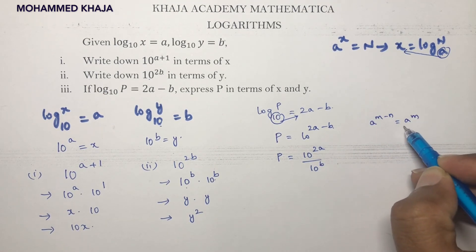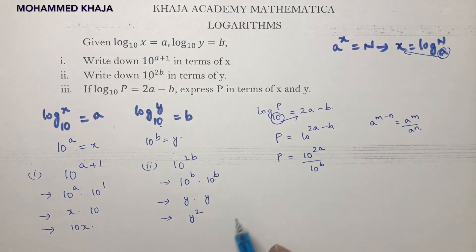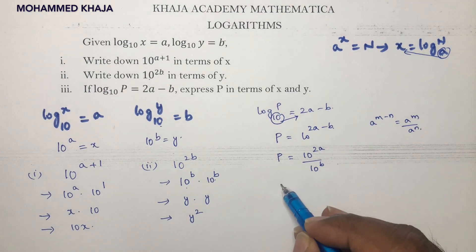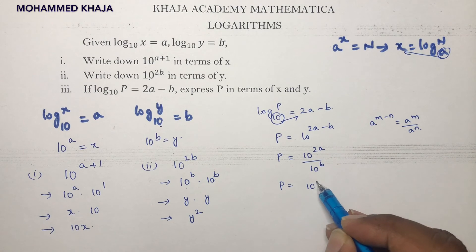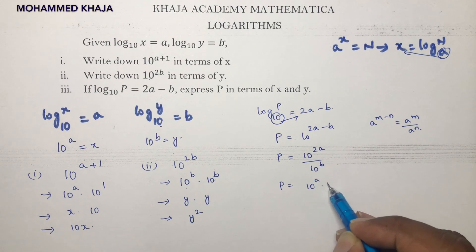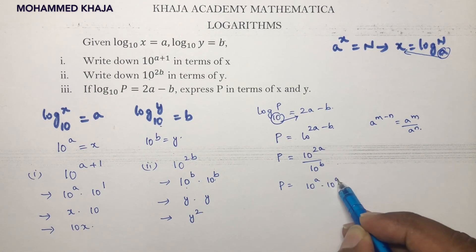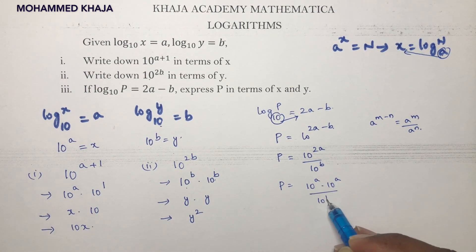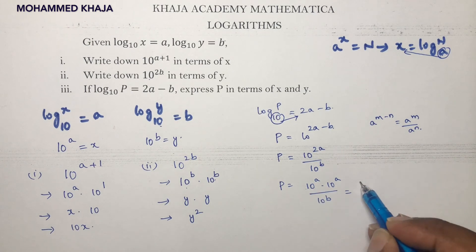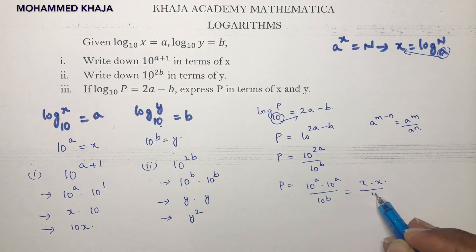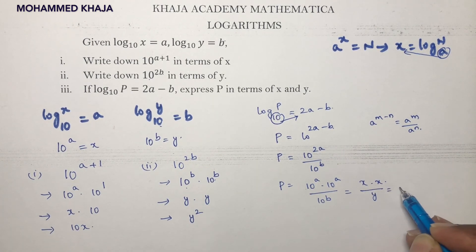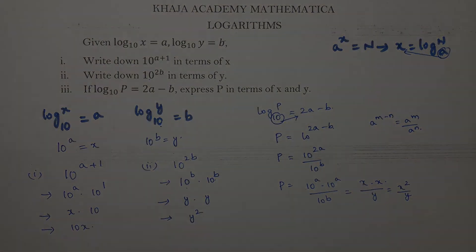Now p = 10^(2a) / 10^b. We write 10^(2a) as 10^a × 10^a. Since 10^a = x and 10^b = y, we get x × x / y, which is x² / y.